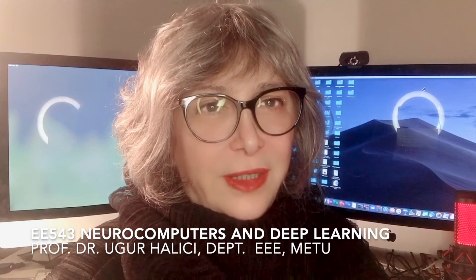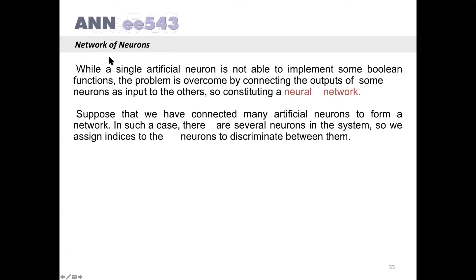In this part of the Neurocomputers and Deep Learning course related to biological and artificial neurons, we will cover characteristics of neural networks made of artificial neurons. Up to now, we constructed only single neurons. In this part, we are going to construct a network of neurons. While a single artificial neuron is not able to implement some Boolean functions, the problem is overcome by connecting the outputs of some neurons as inputs to others, thus constituting a neural network.